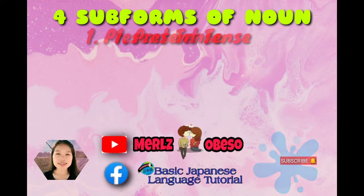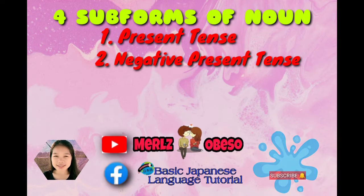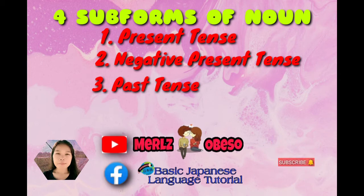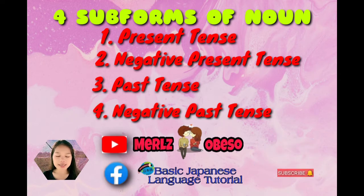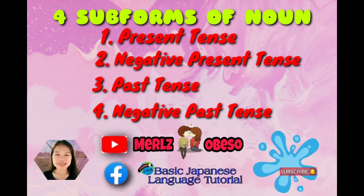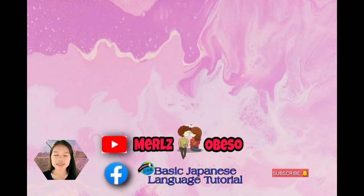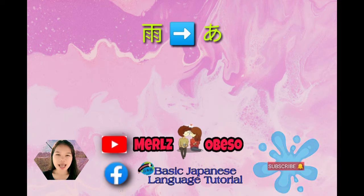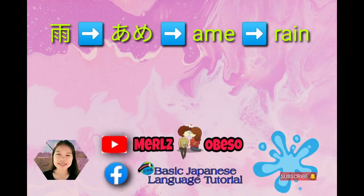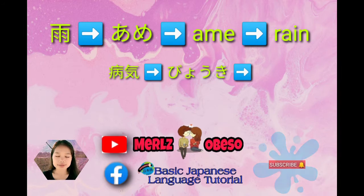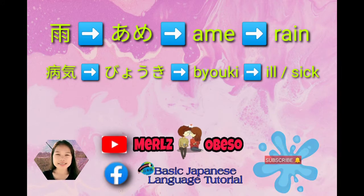First, the present tense. Second, negative present tense. Third, past tense. Pang-apat ay negative past tense. So, ito yung mga nouns na gagamitin natin. First, ame — rain. Next, buki, in English: ill or sick.